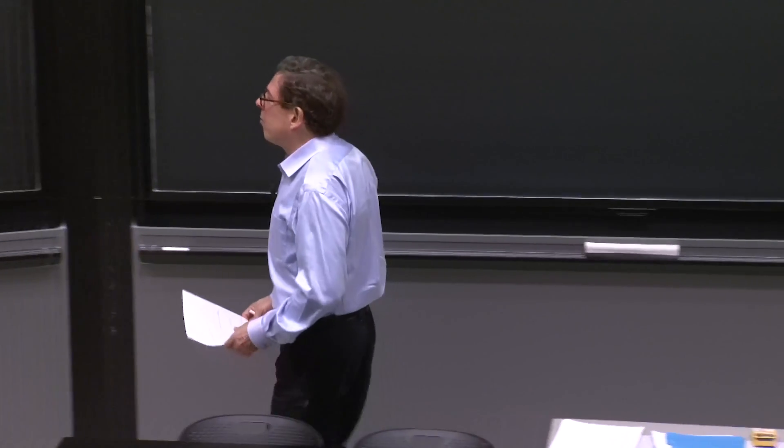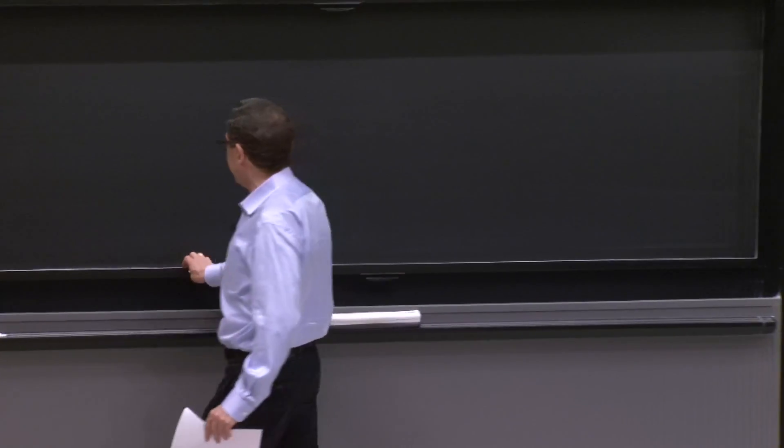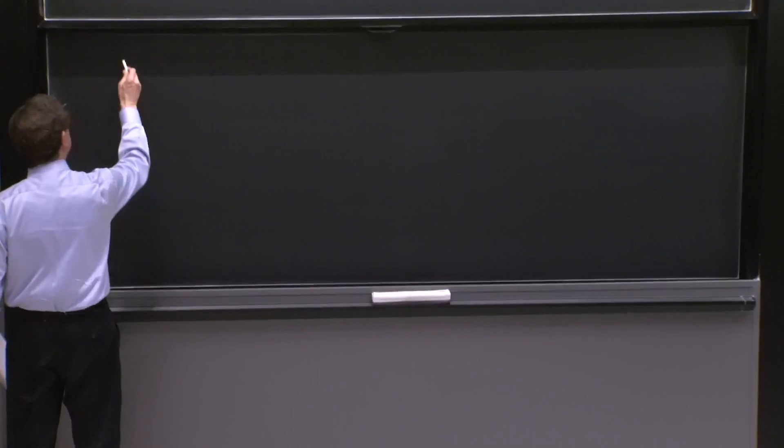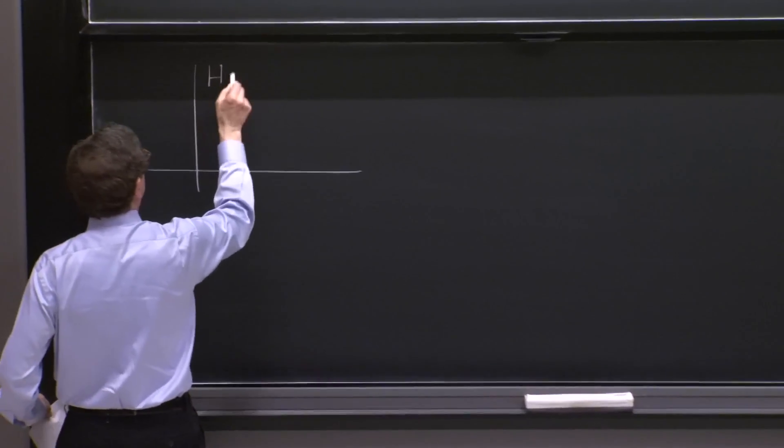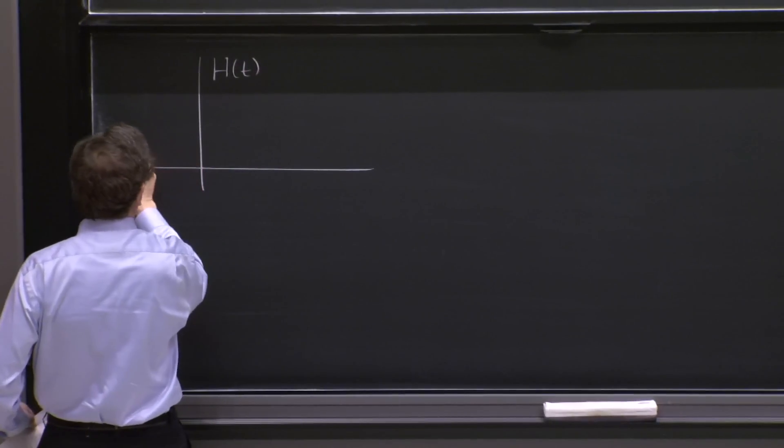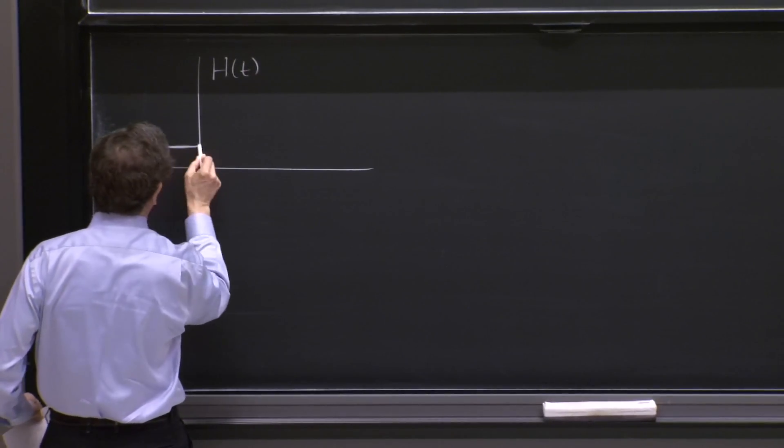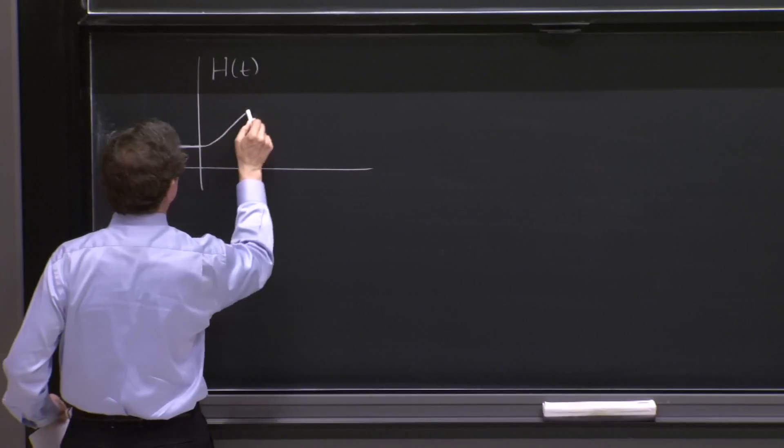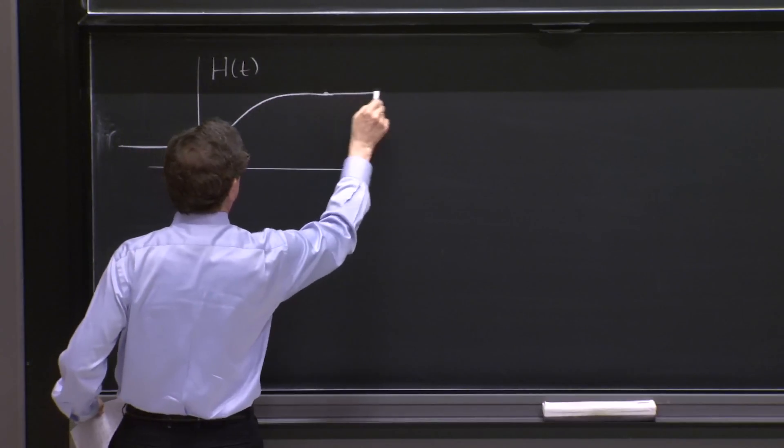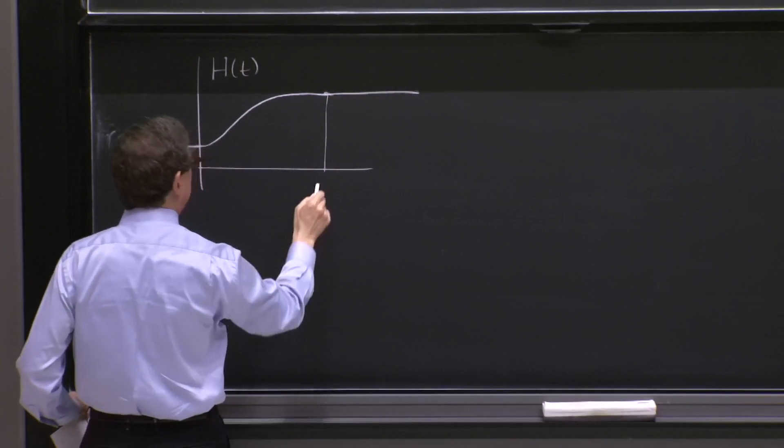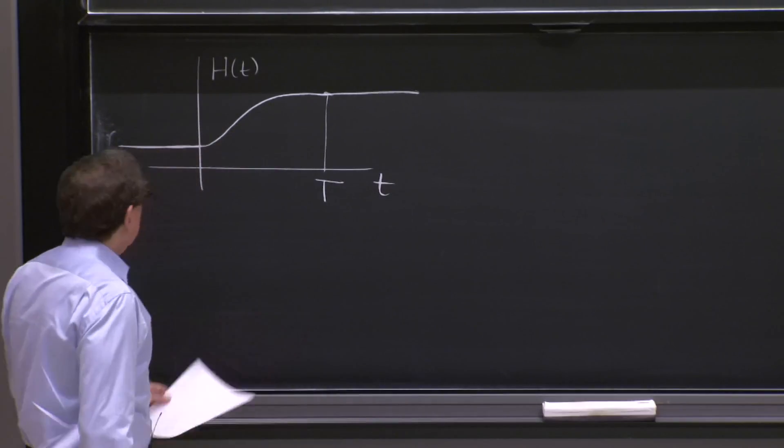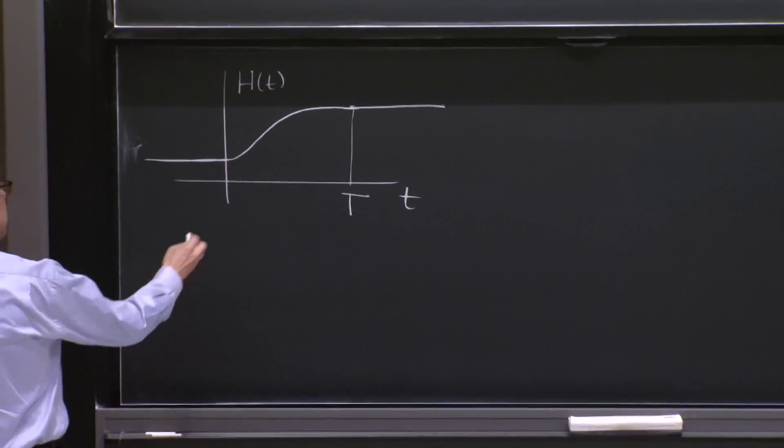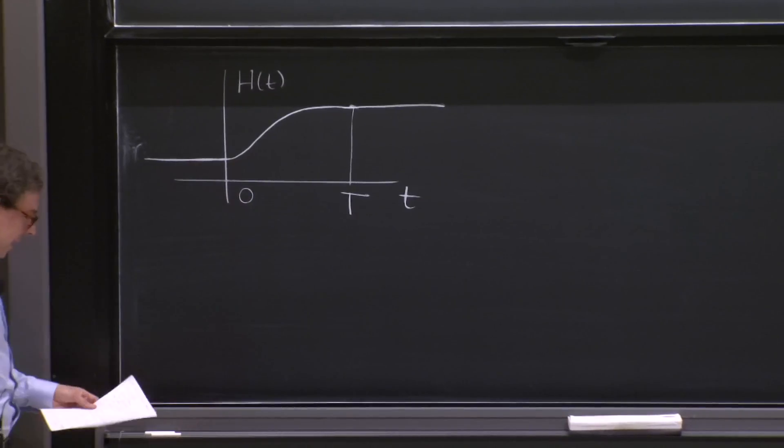So let me remind you of what we had so far. So we imagine we have a Hamiltonian that depends on time and maybe had no dependence before time equals 0 turns on. And it has no further variation after some time t.